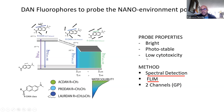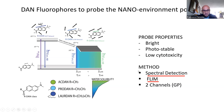We are developing this method using spectral, hyperspectral detection. The measurements you will see have been carried out with a laser scanning microscope equipped with a 32-channel hyperspectral detector. We have also carried out investigations with FLIM, but today I'm going to show you just the hyperspectral imaging. The probes we selected are acdan, prodan, and laurdan.